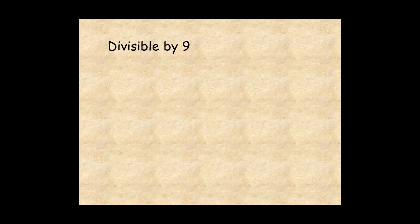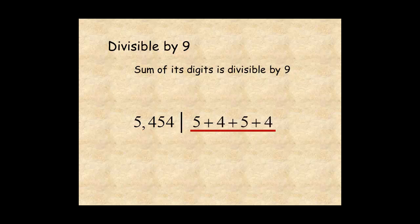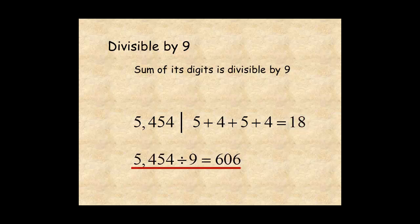A number is divisible by 9 if the sum of its digits is divisible by 9. For example, the number 5,454: the sum of its digits, 5 plus 4 plus 5 plus 4, is 18. Since 18 is divisible by 9, the number 5,454 is divisible by 9. And you can see, 5,454 divided by 9 is 606.